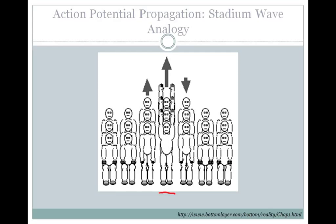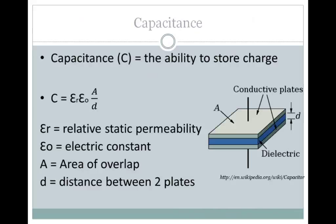Some of that current is going to spread to the next patch of membrane, which will start to pull it up towards threshold, and then it will stand up and do the stadium wave, or fire an action potential, and so on down the line.